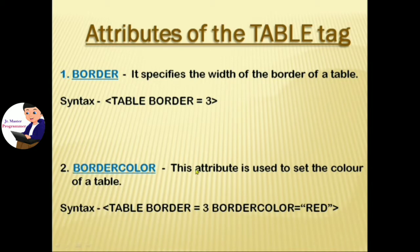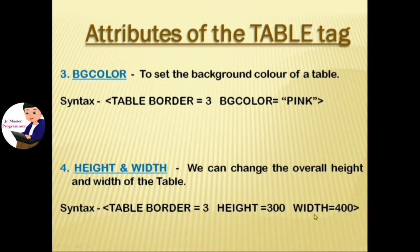Second: bordercolor — this attribute is used to set the color of a table border. You can use both border and bordercolor attributes together. Within double quotes, type the color name. Next: bgcolor — to set the background color of a table. Type bgcolor within double quotes with your chosen color name.